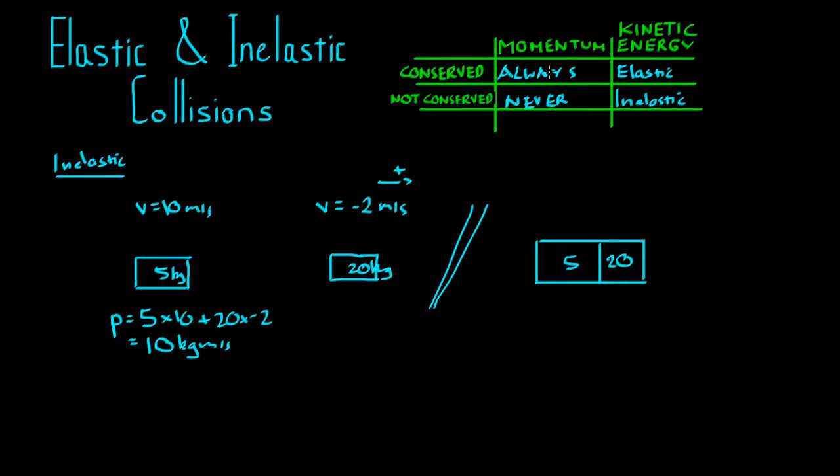So therefore, if momentum always has to be conserved, the momentum in this second snapshot has to be the same. So P is equal to 10 kilograms metres per second, and that must equal mv for this combined block. And we should note the mass of the combined block is 25. So 10 equals 25v. V is equal to 0.4 metres per second.